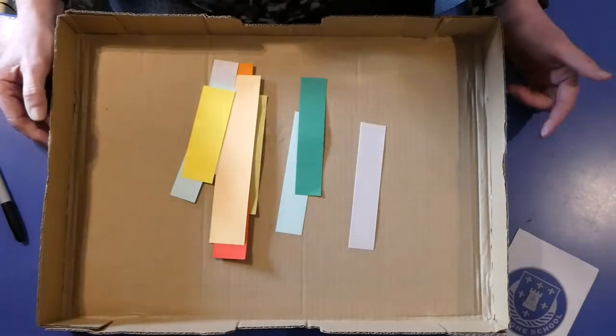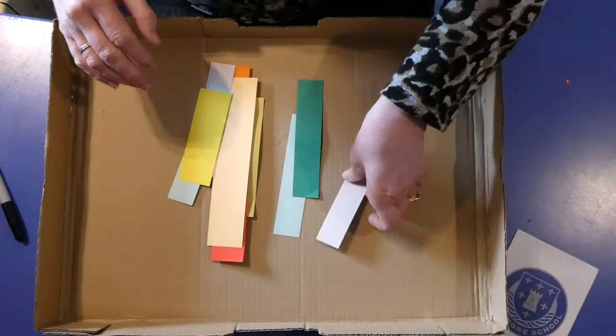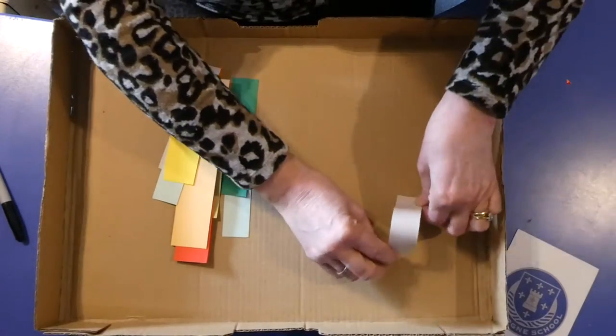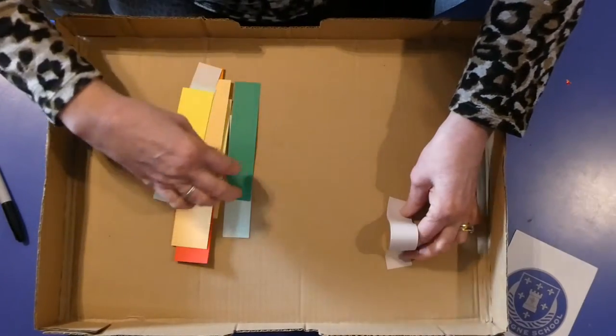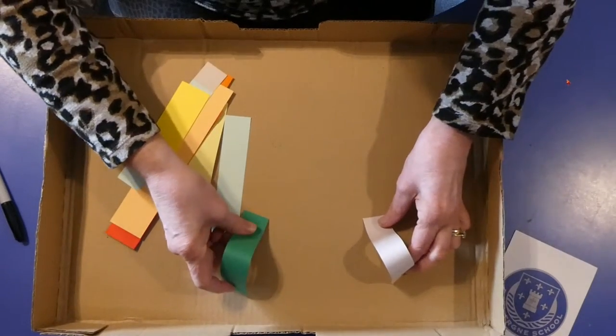You could even do this on a tray if you had a tray that nobody was using for a little while because these things can be removed afterwards. What we're going to do is make some little tunnels on our tray shape so that we've got somewhere for a little ball to run through.